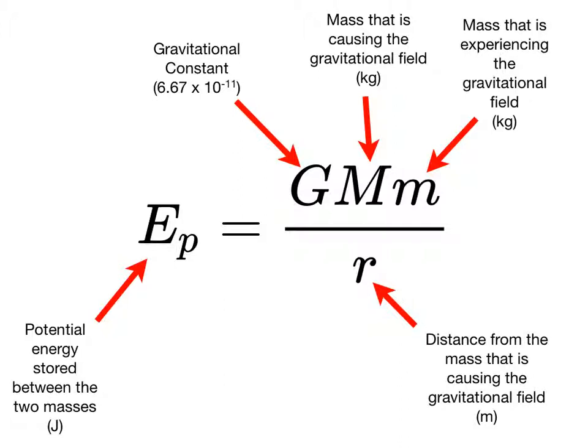and we do work to separate those two masses so that they are some distance apart r, then the work that we do to separate those two masses is stored in the gravitational field between those two masses, and it's called gravitational potential energy.